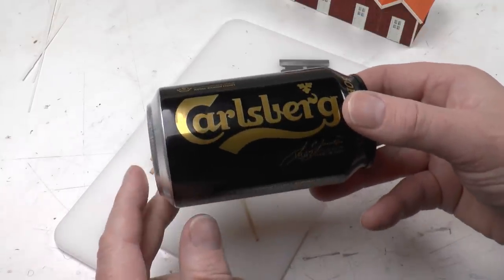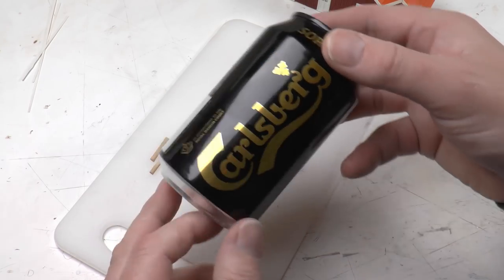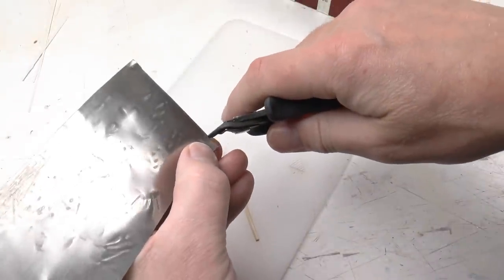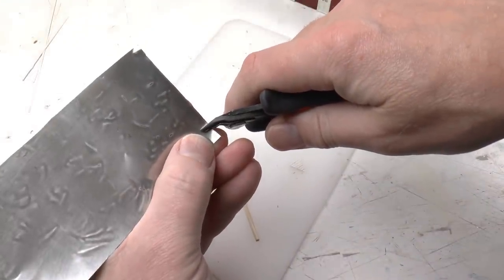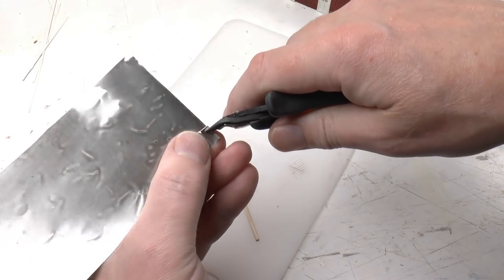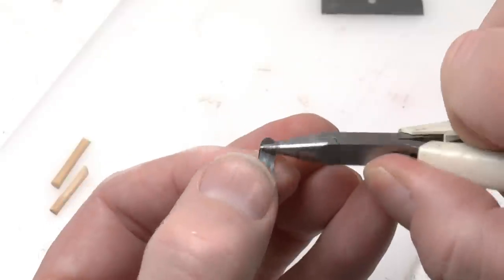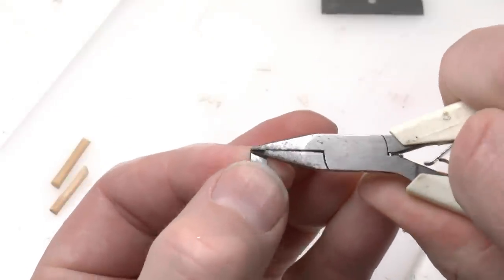The lamp itself will be made from a piece of can. This is a Carlsberg beer can which I cut out a small piece from. And then I just cut the corners around and bend it.